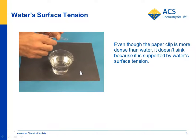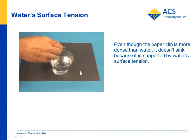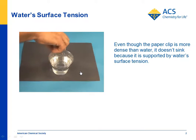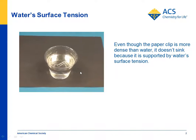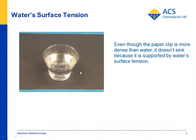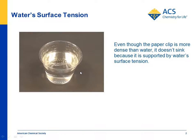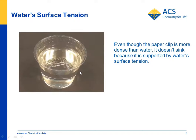If you take a paper clip and place it carefully on the top of a cup of water, you should be able to make it sit there. Students can either do that or you can do it as a demonstration. The question is: why does a paper clip, which is more dense than water and ordinarily sinks, sit on the top like that? It's not technically floating because it's not less dense than water — it's being supported by water surface tension.